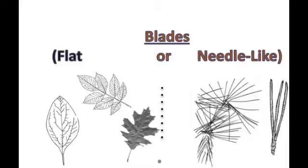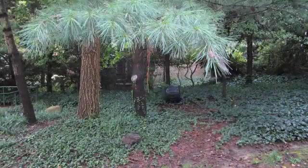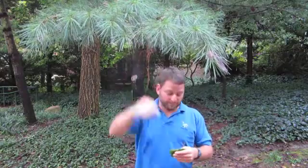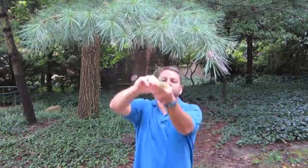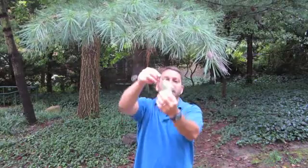Blades can either be flat or needle-like. When we look at a leaf, the first part we look at is the blade. The blade is going to tell us some big general information that lets us narrow down the possibilities of what kind of tree the leaf came from. Leaves can either be needle-like, like a pine needle, or flat, like a pancake.